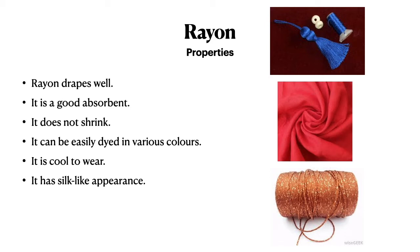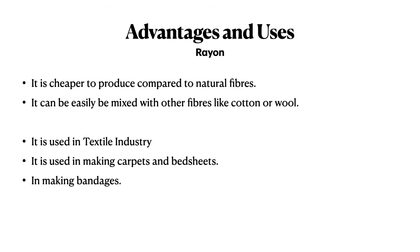Properties of rayon: it drapes well — meaning it can be easily folded; it is a good absorbent of moisture; it does not shrink; it can be easily dyed in various colors; it is cool to wear and suitable for summer; and it has a silk-like appearance, which is why it is called artificial silk.